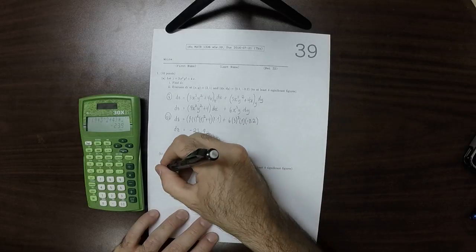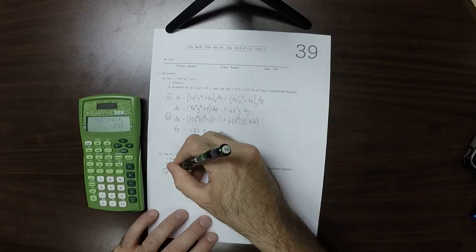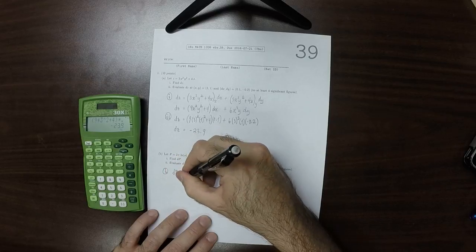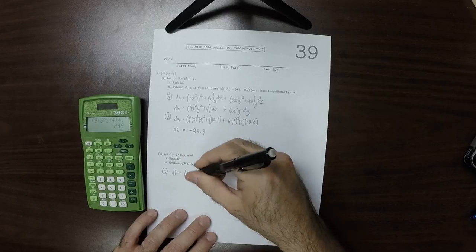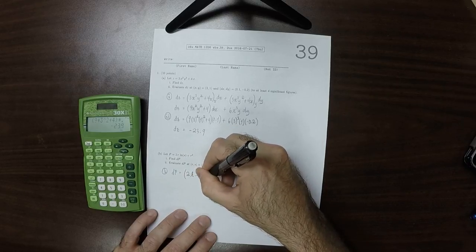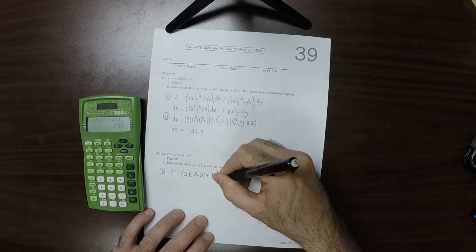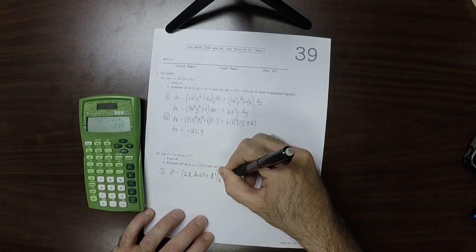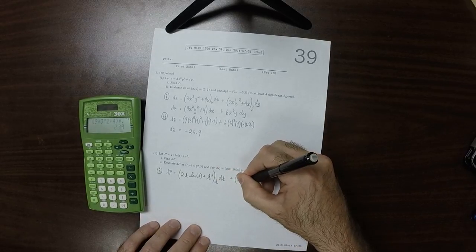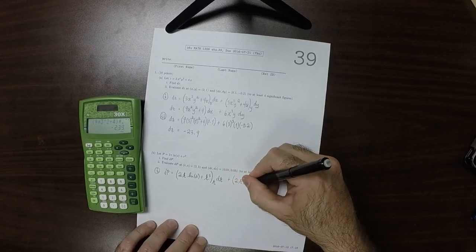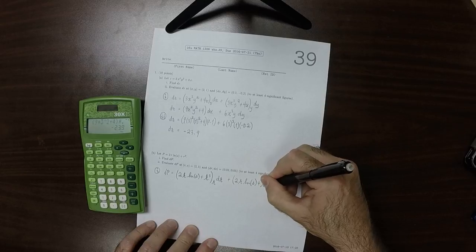So in part b, part i is find the differential dp. So dp is the r partial of 2r log s plus r cubed times dr, plus the s partial of 2r log s plus r cubed.